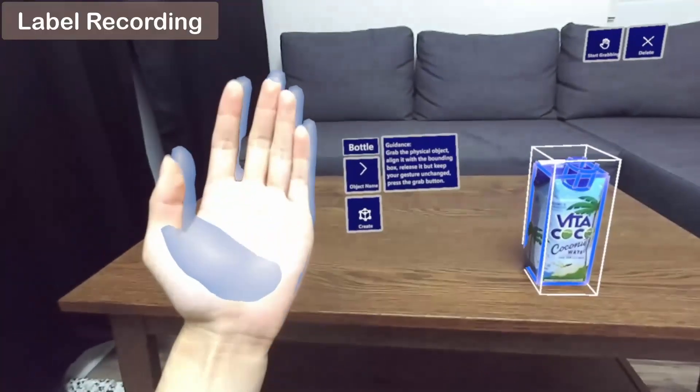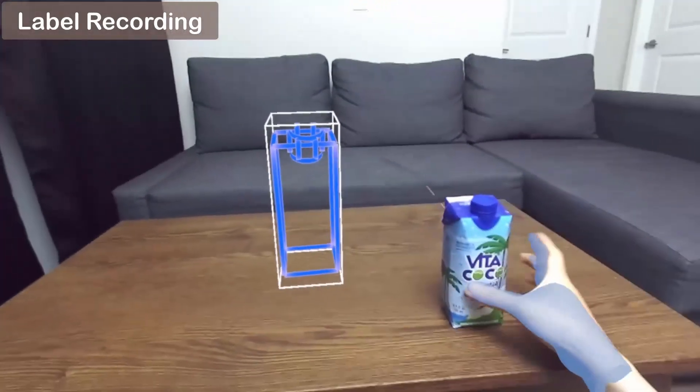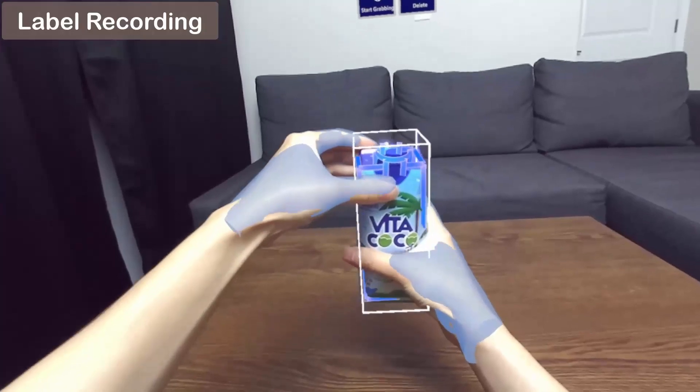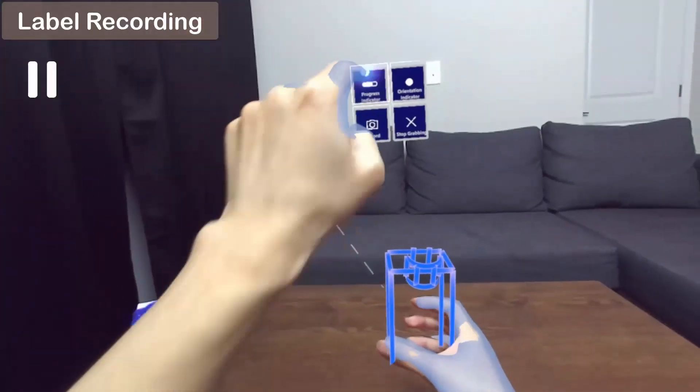Now, the user starts the label recording process. Following the guidance provided by the system, the user grabs the bounding contour in a manner similar to grabbing the physical bottle. Arnotate provides various visual indicators to help the user record high-quality datasets.